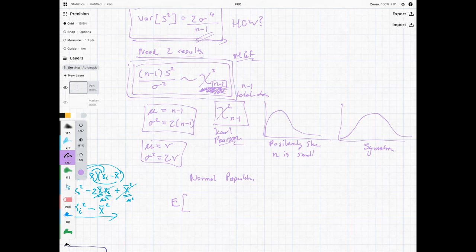You can say that the expected value of n minus one s-squared divided by sigma-squared is going to be equal to n minus one. We know that because we know what the expected value is of our chi-squared distribution. That's where that magic's coming in.